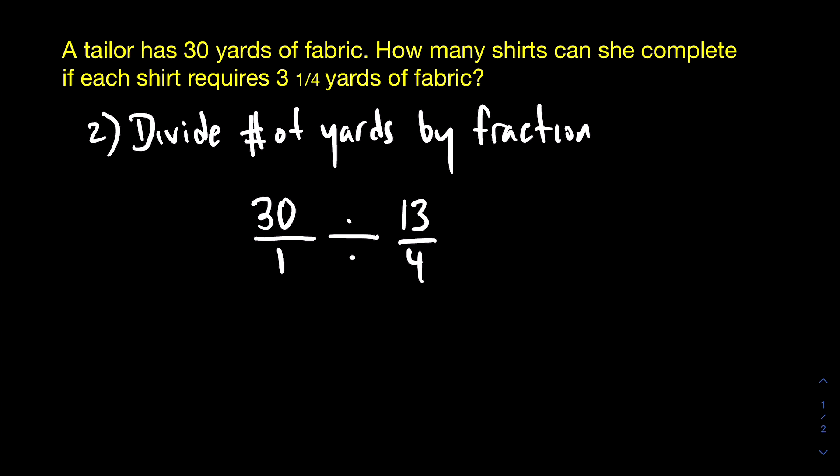So the reciprocal is basically when you take a fraction and you flip it on itself. So the four would become the numerator in the top, and then the thirteen would become the denominator.